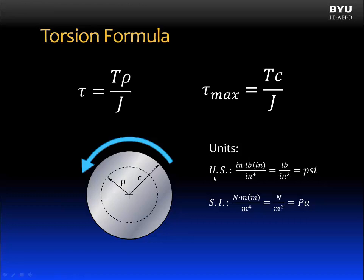Now let's talk about the units. In US customary units, the value for T is a torque typically given in inch-pounds. C is given in units of inches. And J is given in units of inches to the fourth power. This reduces to pounds per square inch or psi.